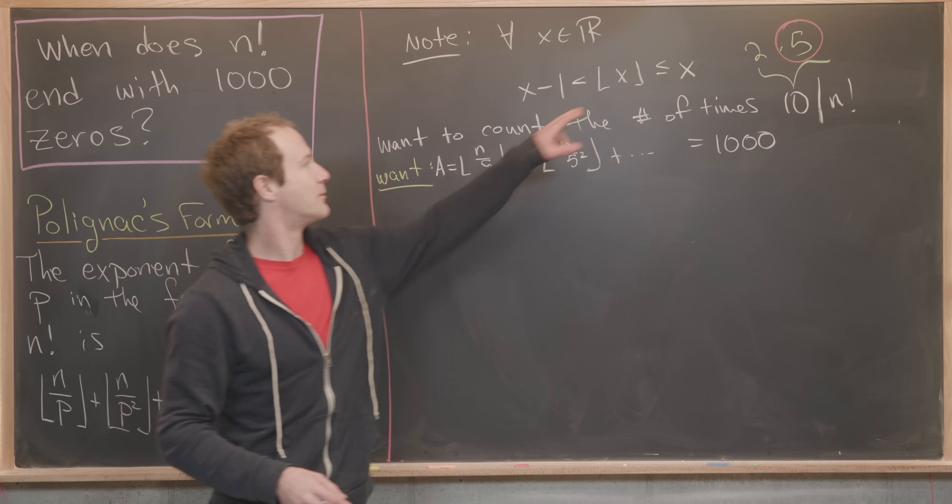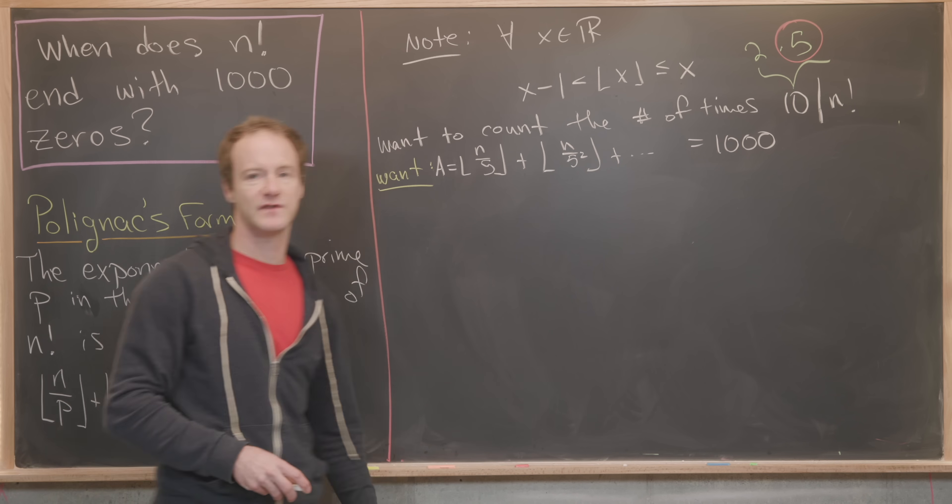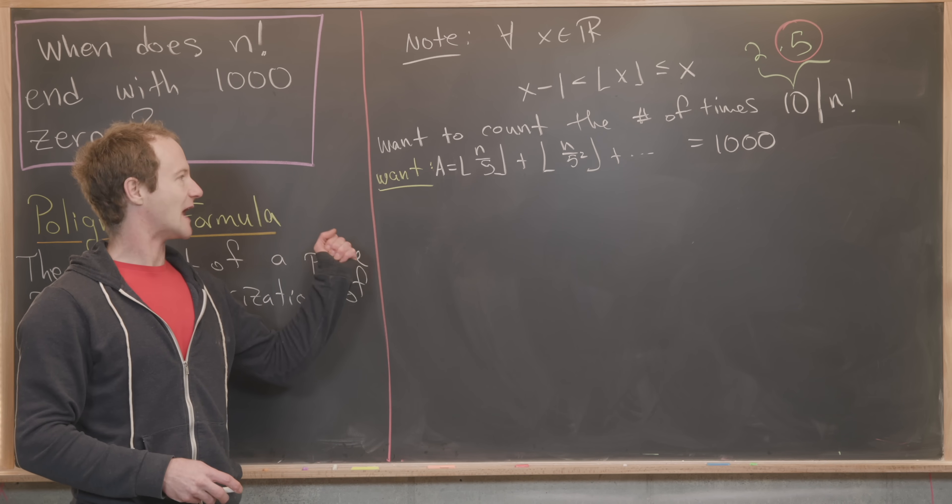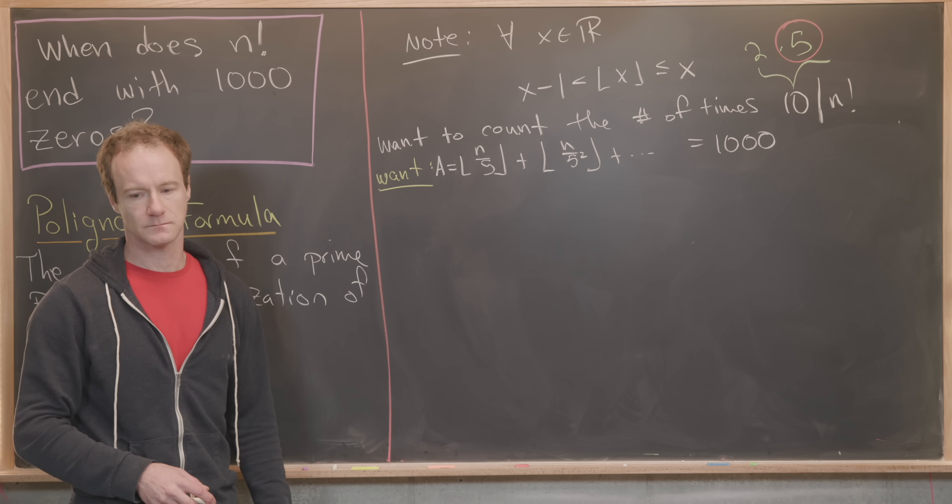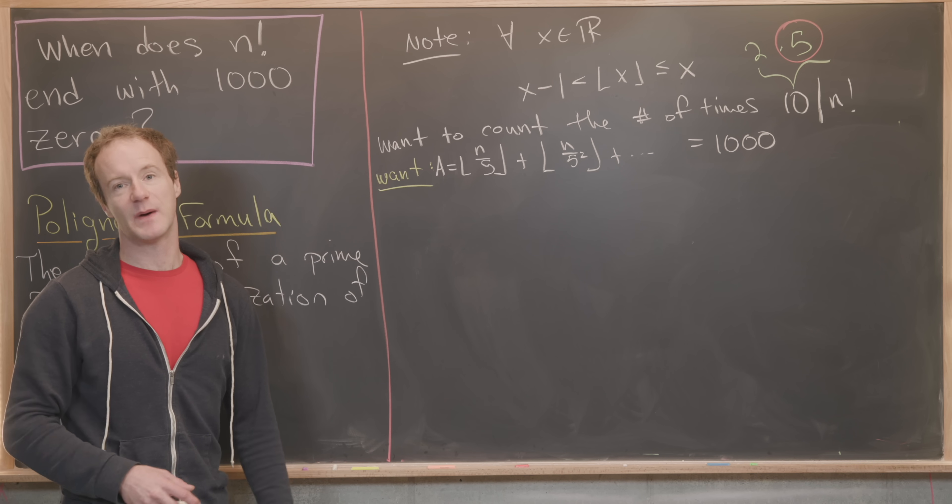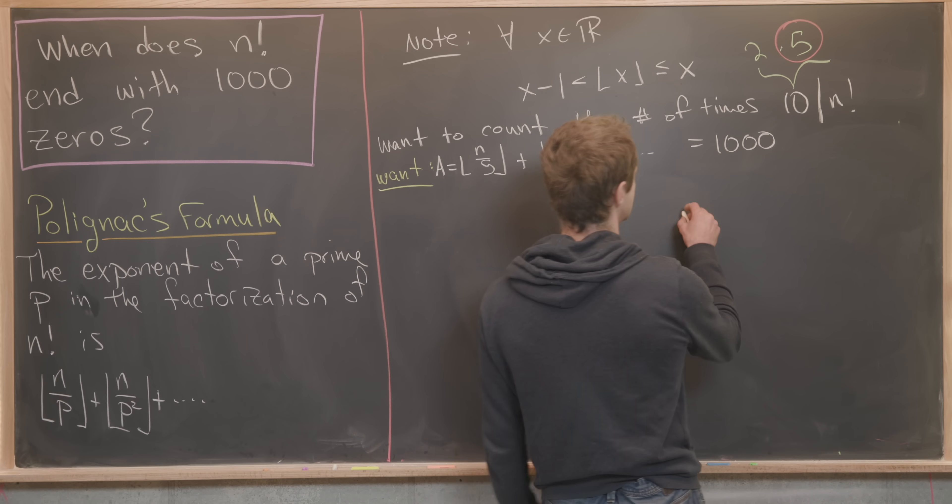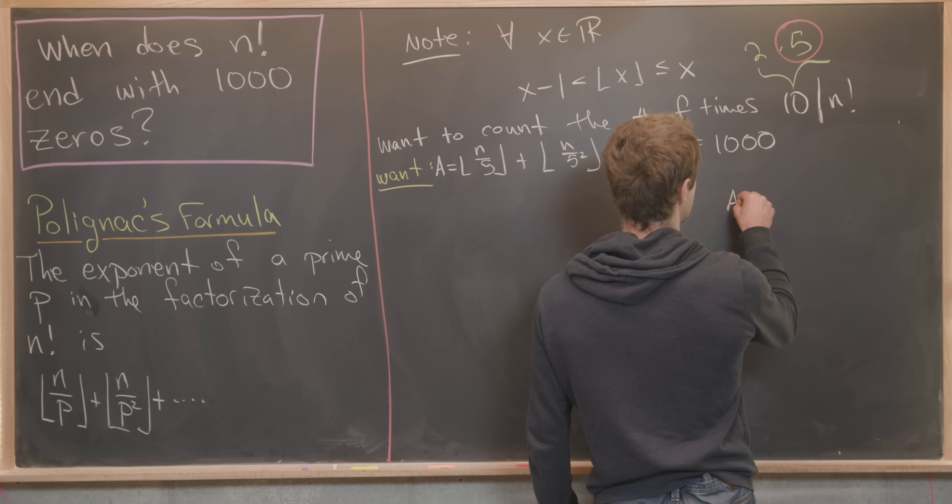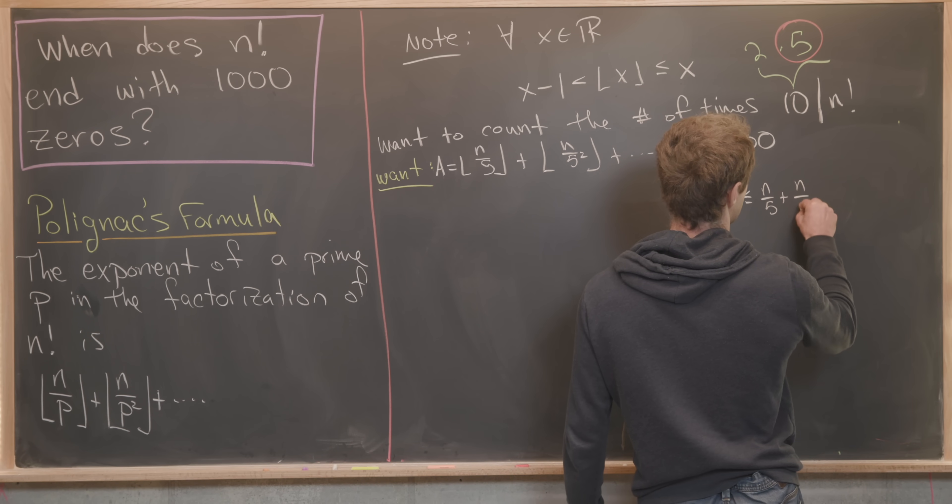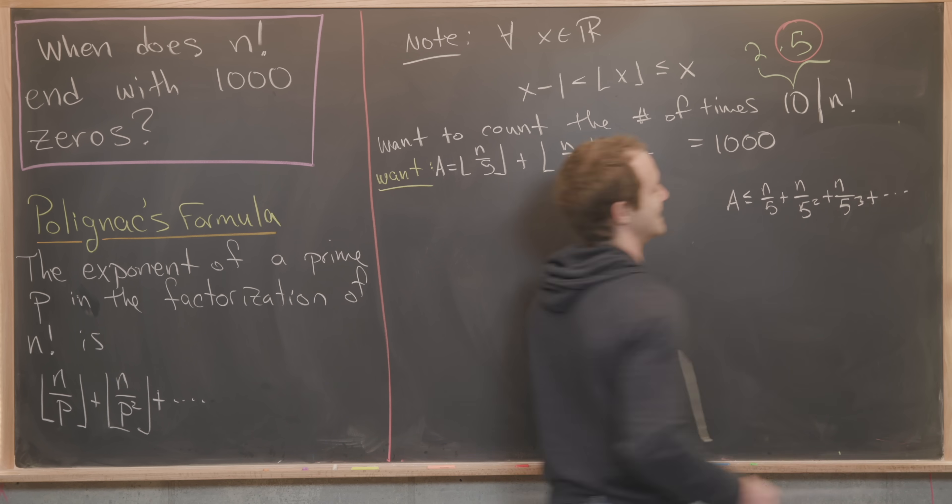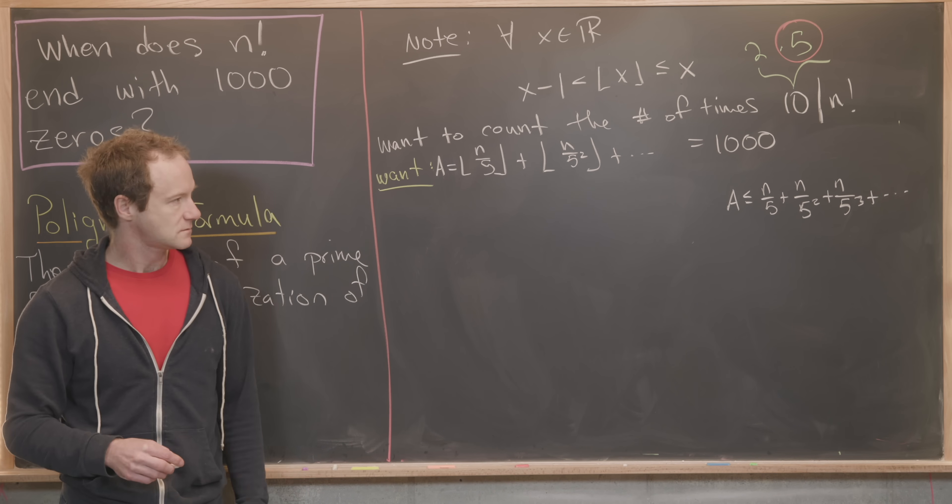Now let's apply this top part of the inequality to each of these terms to bound A above by some object that is a little bit easier to deal with. We're going to have A is less than or equal to n over five plus n over five squared plus n over five cubed, and that is an infinite sum.